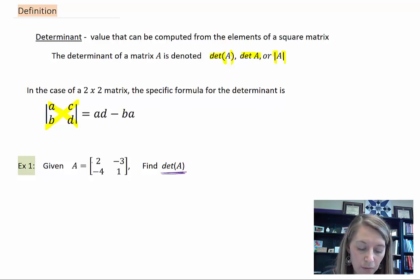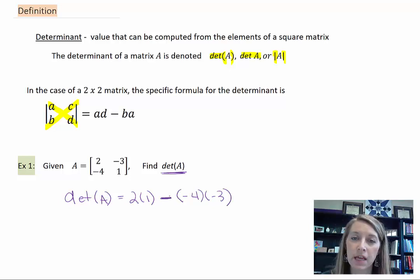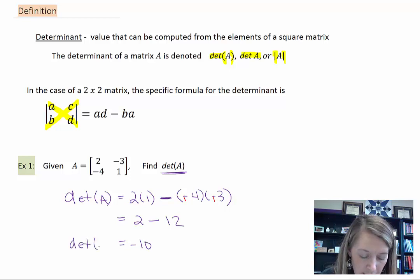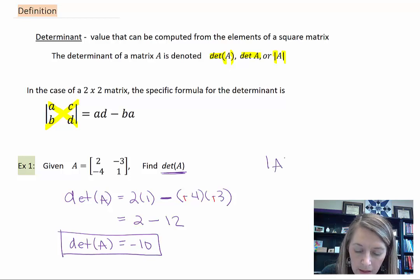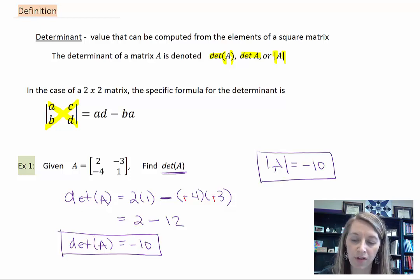We're going to find the determinant of A, which means we multiply 2 times 1, and we subtract negative 4 times negative 3. Be careful of the subtraction in the negatives because they can really throw you off. This gives us 2 minus here. These two negatives cancel out, and 4 times 3 gives you 12. So the determinant of A here, the answer is negative 10. Or we could also say the determinant of A is negative 10. Either way you denote it is perfectly fine.